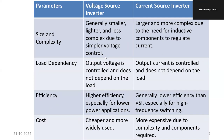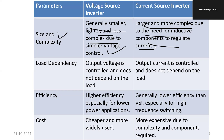Looking at size and complexity, the VSI is generally smaller in size, lighter in weight, and less complex due to voltage control. Voltage control is pretty straightforward compared to current control. Regarding the current source inverter, it is more complex — we have to consider inductive components and regulate the current, which is a cumbersome task. That is why the current source inverter is very rarely used.